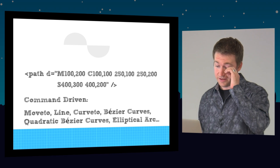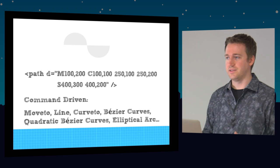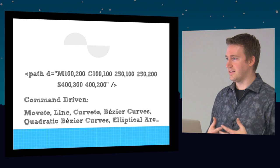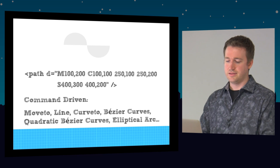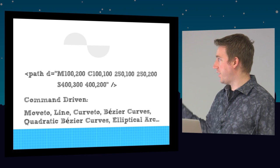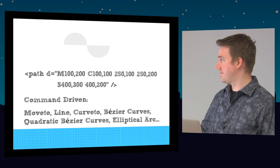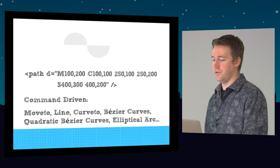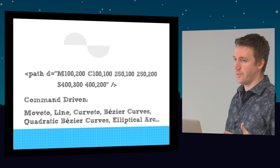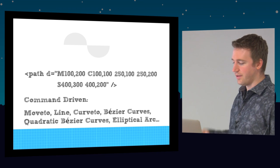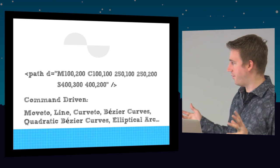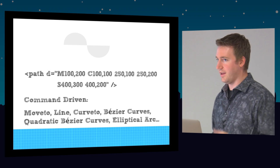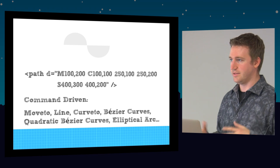The path element is really where the power of SVG comes. You basically have these commands — moving to an x and y, which is 100, 200 — and you chain these commands together to draw the shapes. The C is a curve-to command. It's just a set of commands that draws the graphics.